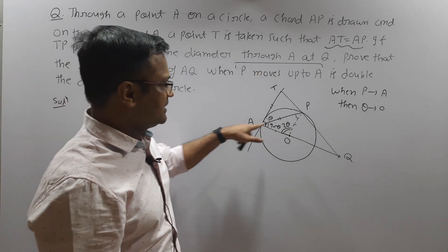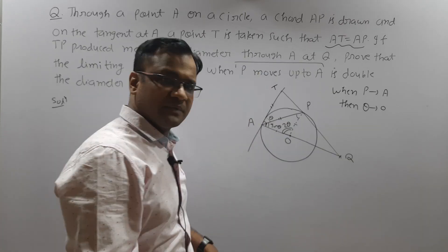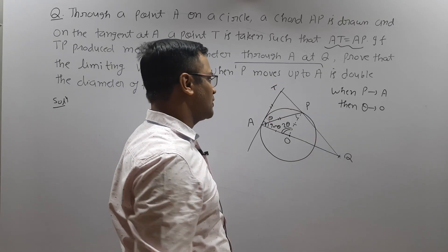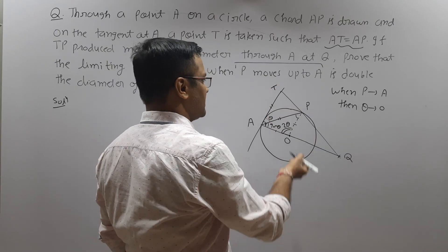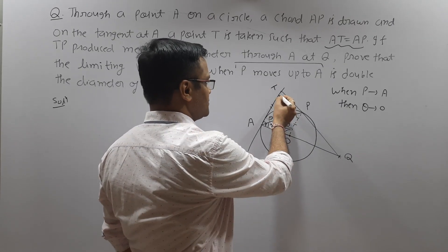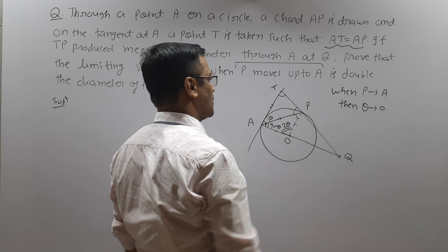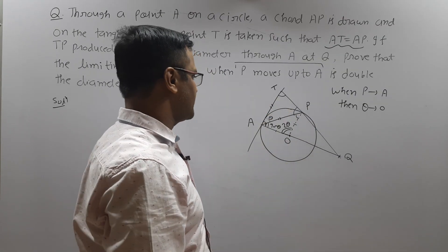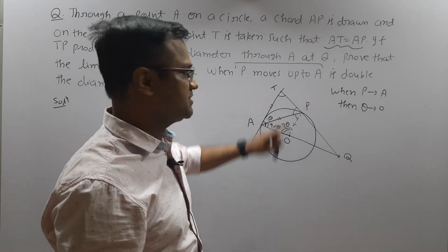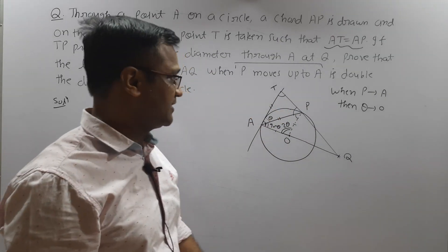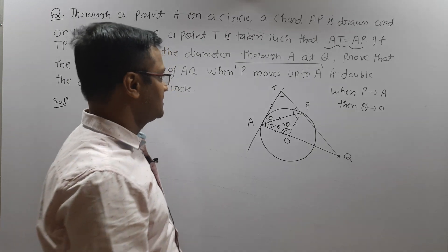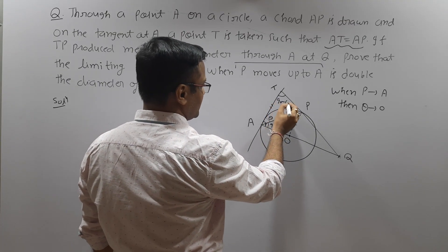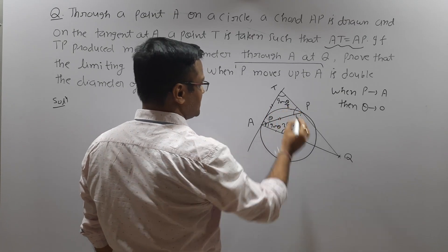Now look at triangle ATP. AT and AP are of equal length, and we know that angles opposite to equal sides in a triangle are equal, so these two angles are also equal. If angle TAP is θ, then the sum of the two base angles is 180 minus θ, so each base angle becomes 90 minus θ/2.